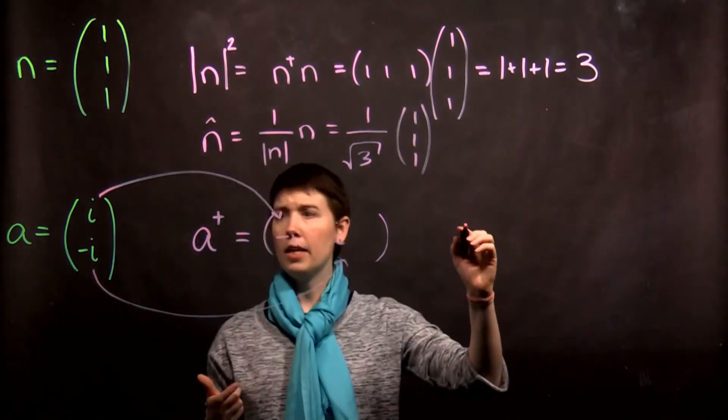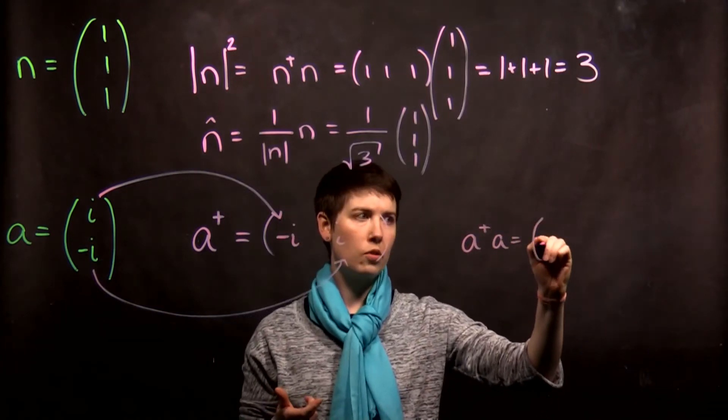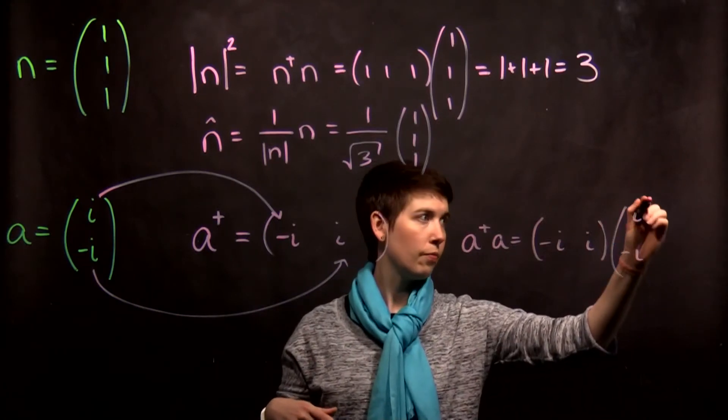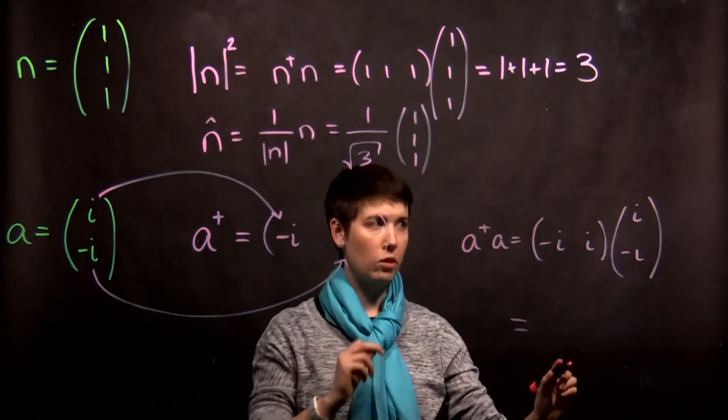So, now, when I say a dagger times a, this looks like negative i, i, times i, negative i. And so, again, we go row, column, we expect one entry.